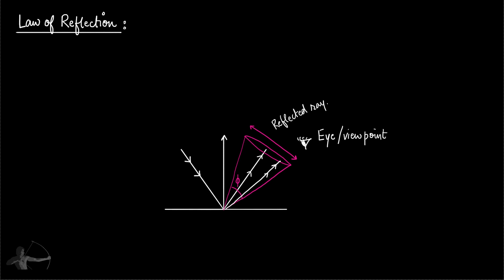This takes us back to the Lambertian cosine law, where the value of diffuse reflection was based on the dot product of vector normal and vector light — also the cosine theta of these two normalized vectors. The Lambertian law was defined by n dot l. For specular reflections, the value depends on r and v, defined by vector r (direction of reflected ray) dot the direction of the viewpoint. We define it as max(0, r · v).